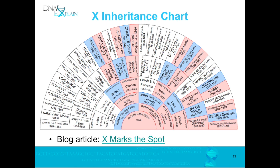Here's an X inheritance chart. I use Charting Companion by Progeny Software to create these — it's reporting software that creates for you an inheritance chart for the X chromosome. Because the male inherits the Y chromosome and does not inherit an X from his father, he only has his mother's X chromosome. So any place that's white on this chart cannot have been inherited, and I can't share an X chromosome with that person. If I have a legitimate X match, it has to be one of these colored blocks. I print this out and keep it where I can look at it alongside my matches.